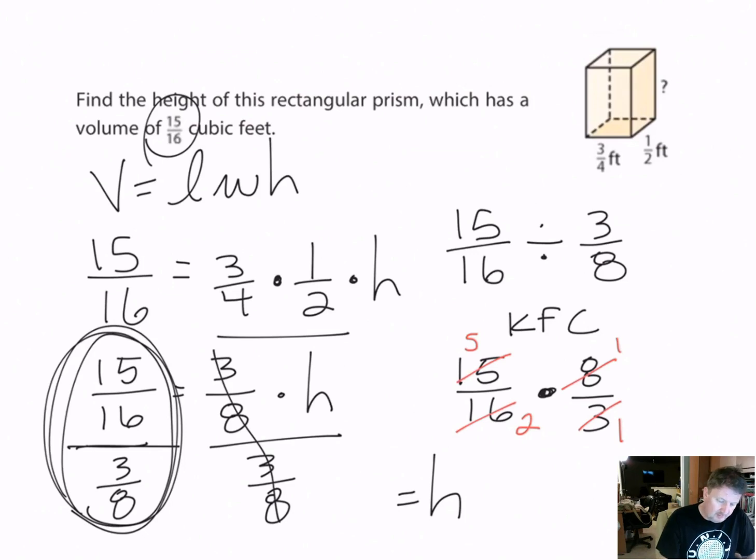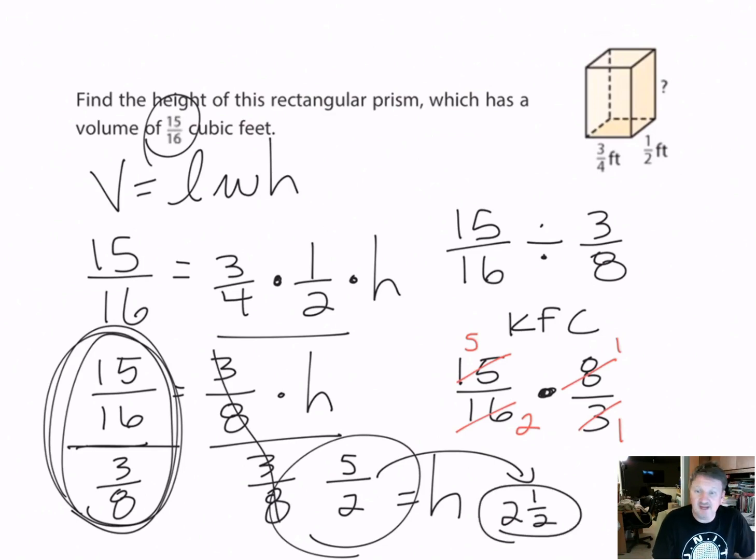I'm going to multiply these two numbers together. 5 times 1 is 5, and 2 times 1 is 2. So 5/2 equals my height. I can simplify this: I divide 5 by 2, that'll go in two times with one left over, so my actual answer is 2 and 1/2. Five halves, two and a half, same thing.